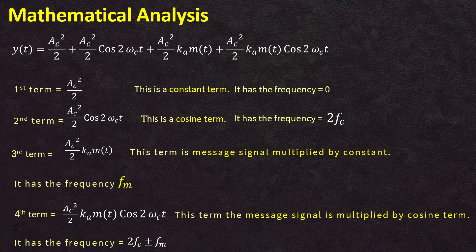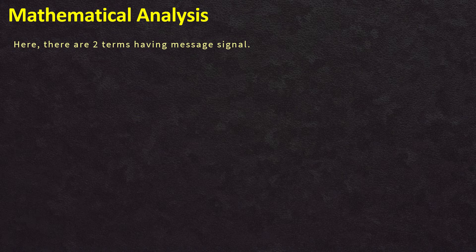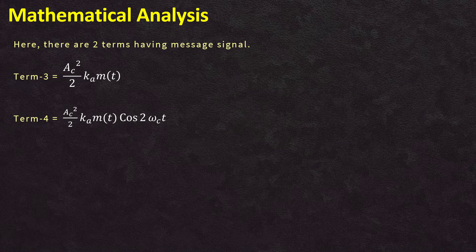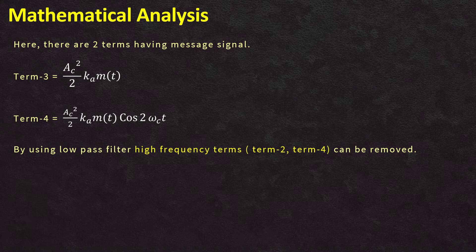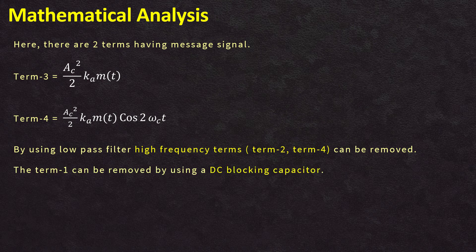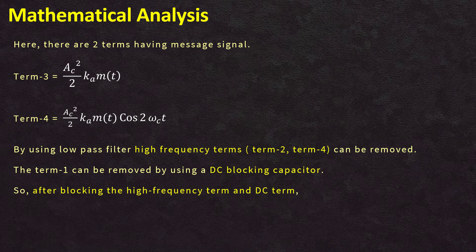In the process of synchronous detection, we want to recover the message signal, so we are only interested in terms containing m(t). There are two such terms: term 3, (Ac²/2)·ka·m(t), and term 4, (Ac²/2)·ka·m(t)·cos(2ωc·t). By using a low pass filter, the high frequency terms — term 2 and term 4 — are removed, and term 1 (the DC component) is removed using a DC blocking capacitor. After filtering, the output is y(t) = (Ac²/2)·ka·m(t), where the message signal is multiplied by the DC constant Ac²/2 and the modulation index ka, giving us the desired demodulated message signal.